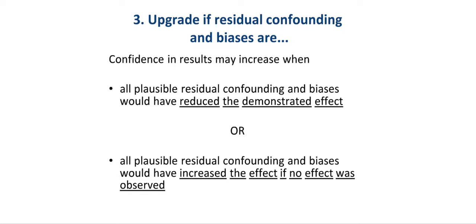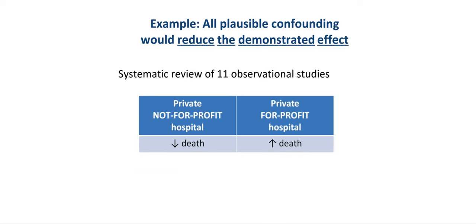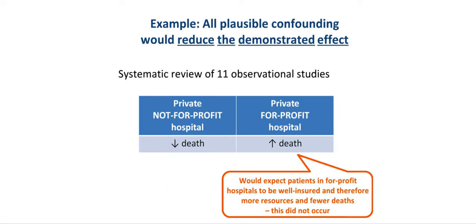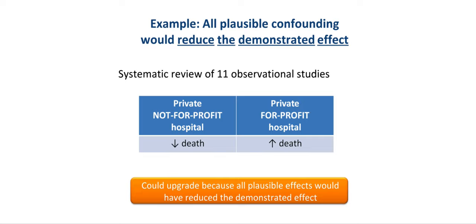The third factor that can raise quality is if all plausible residual confounding and biases may be working to reduce the demonstrated effect, or increase the effect if no effect was observed. For example, a systematic review of 11 observational studies comparing private for-profit versus private not-for-profit hospitals observed higher death rates in for-profit hospitals. That systematic review was rigorous and demonstrated this increased effect on death, despite the fact that patients in not-for-profit hospitals were likely sicker and adjustment for that factor had not been considered.